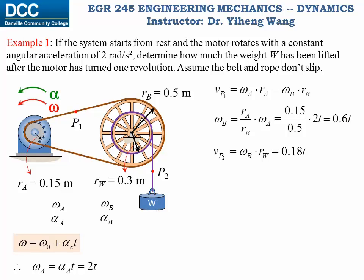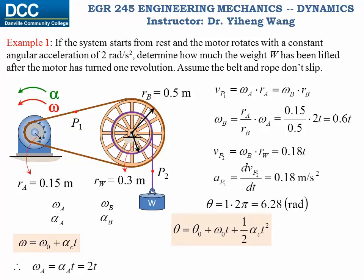This is also the linear velocity of the weight. Taking the time derivative, the linear acceleration of the weight is a constant 0.18 m/s². Since the motor has turned one revolution, that equals 2π = 6.28 radians. Applying the kinematic equation for constant angular acceleration, we solve for t = 2.51 seconds. Then applying the displacement equation for constant linear acceleration with a = 0.18 m/s², we get the displacement of the weight to be 0.565 meters.